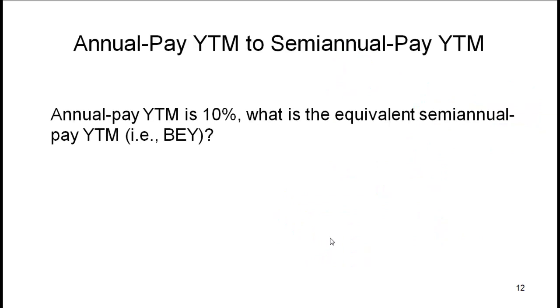Now let's talk about a commonly asked question - a common source of confusion - which is how to convert an annual pay YTM to semi-annual pay. Let's say that there is a bond which is an annual pay bond and on that bond you are getting 10%. What is the equivalent semi-annual pay YTM, also called the bond equivalent yield?